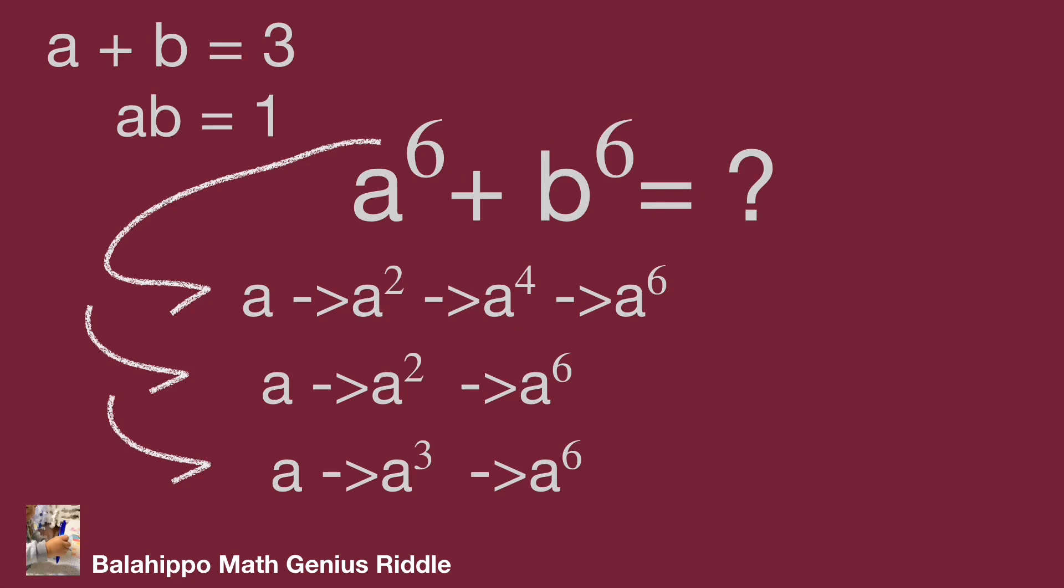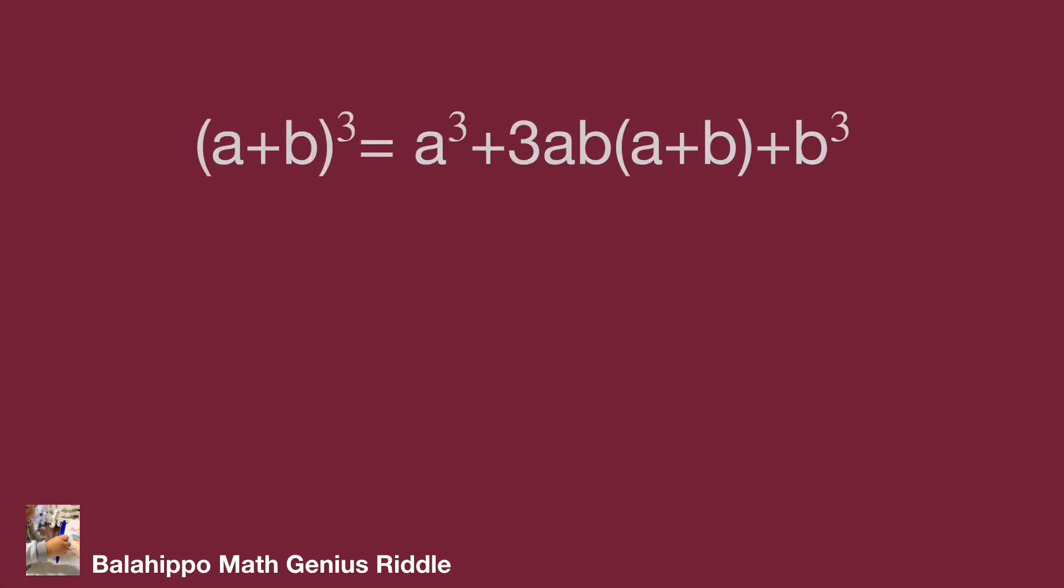I'm going to generate a power of 6 with the last approach. So let's generate a cubed at the beginning. We know quantity a plus b cubed equal to a cubed plus 3ab multiply quantity a plus b plus b cubed. Then move 3ab times bracket a plus b bracket to left side of the equation. It becomes quantity a plus b cubed minus 3ab times a plus b bracket equal to a cubed plus b cubed.